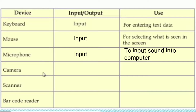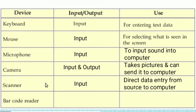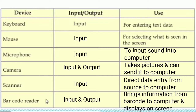Next we have the camera. It can work as both an input and output device, because it takes pictures and can send them to the computer. Next is the scanner, which is an input device used for scanning data and entering it into the computer — direct data entry from the source document. The next is the barcode reader, also an input device that brings information from the outside world into the computer, though it may also display or print results, making it an output device too.